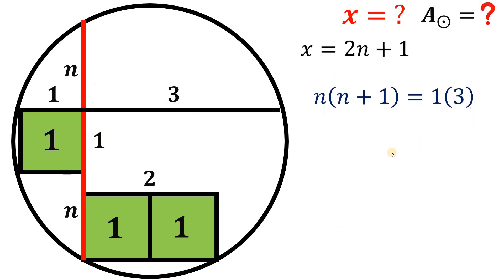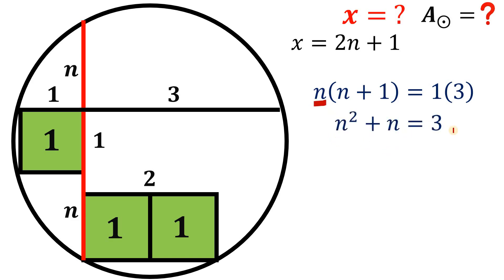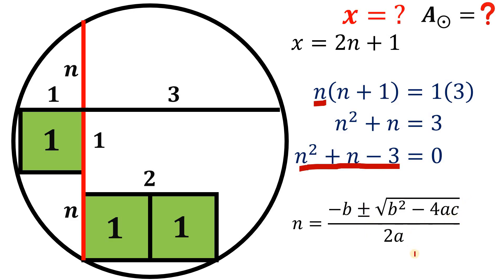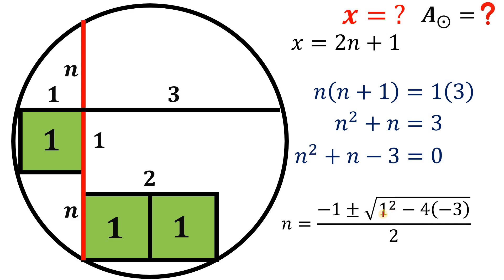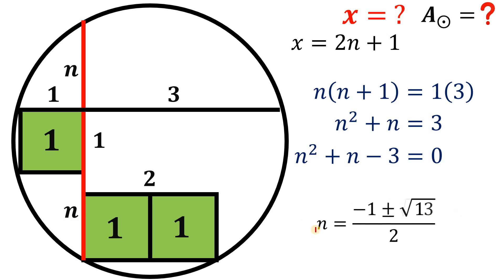Let's focus on this equation and find n. Distributing n, we have n squared plus n equals 3. Equating to zero, we use the quadratic formula since this equation is not factorable: negative b plus or minus square root of b squared minus 4ac, all over 2a. Here a equals 1 (coefficient of n²), b equals 1 (coefficient of n), and c equals negative 3. Simplifying: 1 squared plus negative 4 times negative 3 gives 1 plus 12, which is 13. Since n is a length and must be positive, n equals (negative 1 plus square root of 13) over 2.